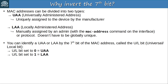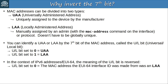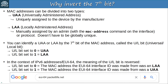However, in the context of IPv6 addresses and EUI-64, the meaning of the UL bit is reversed. If the UL bit is 0, it means the MAC address the EUI-64 interface ID was made from was an LAA. If it's 1, it means the MAC address was a UAA. Note that this doesn't actually affect the function of the IPv6 address itself — it doesn't mean the IPv6 address is universal or local. If you want to know the exact reasons for this switch, do a Google search for EUI-64 packetlife.net. It's fun to get into the details, but we're moving outside the scope of the CCNA now, so let's move on.